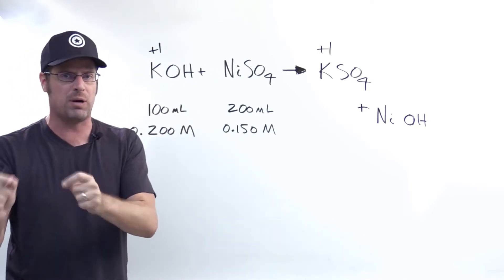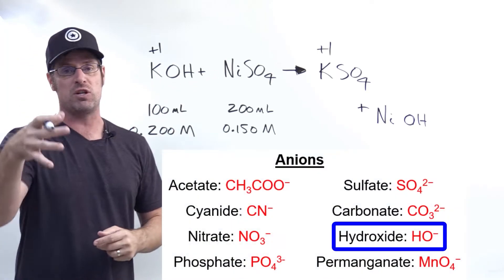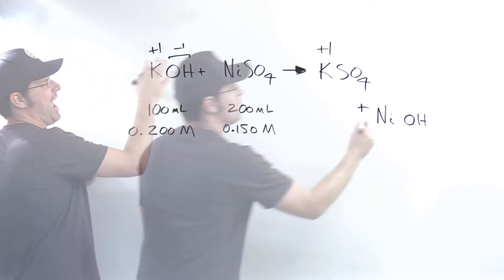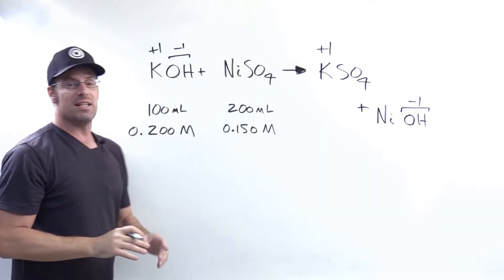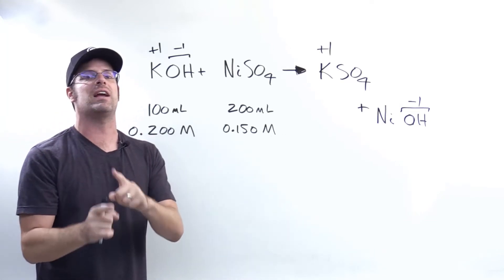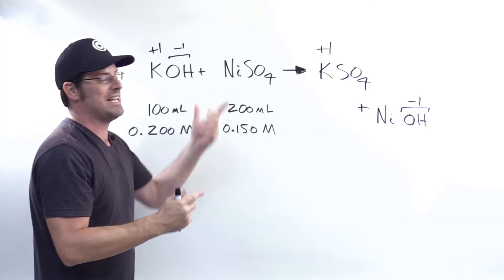Hydroxide is a polyatomic we should memorize. We should know has a negative one charge. So I'm going to write just a negative one right there and right there. Now nickel is a transition metal, which means that it could potentially have multiple different charges depending on the circumstance. So how do we deduce its charge?